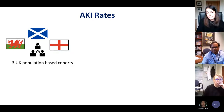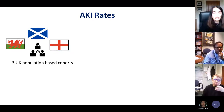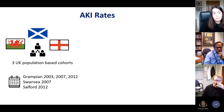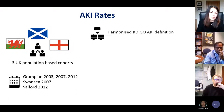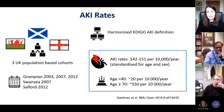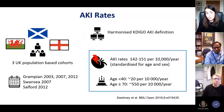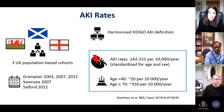Work by Simon Sawhney in Aberdeen applied a uniform AKI definition to three UK population-based cohorts in England, Scotland, and Wales. Using a harmonized KDIGO definition with standardised code across different centres, AKI rates were similar at 142 to 151 per 10,000 per year after standardization for age and sex. By age, it's around 20 per 10,000 per year in those under 40, rising dramatically to 550 per 10,000 per year in the over-70s.